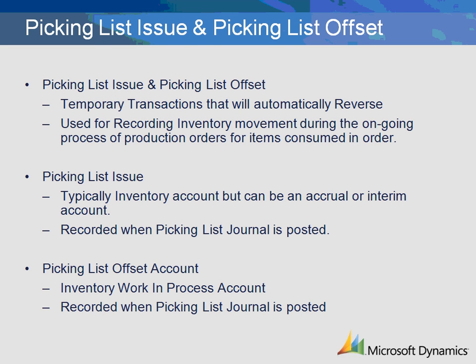The Picking List Issue Transaction is the setup related to the reduction of inventory as a result of issuing material through a production order. The transaction is created when the Picking List Journal is posted. The ledger account for this transaction is typically the inventory account associated with the item being issued to the production order and is credited at the time of the Picking List posting.